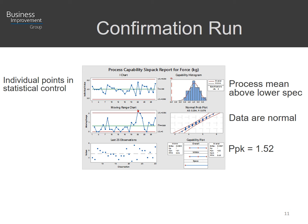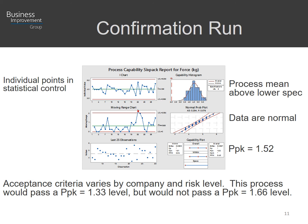We have a process performance index PPK of 1.52, which is a measure of how well a process can perform and produce a particular output. In the medical device industry, acceptance criteria can vary by company and are also based on risk, but common levels are 1.33 and 1.66. This particular process would certainly be acceptable at the 1.33 level, but would not pass at a PPK of 1.66.